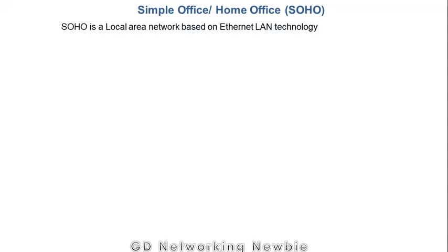Hi everyone, today we are going to discuss simple office, home office or SOHO network and then enterprise network after finishing with this. SOHO is a small network having from 1 to 10 users, and specifically the definition of SOHO is that it is a local area network based on Ethernet LAN technology. LAN stands for local area network.